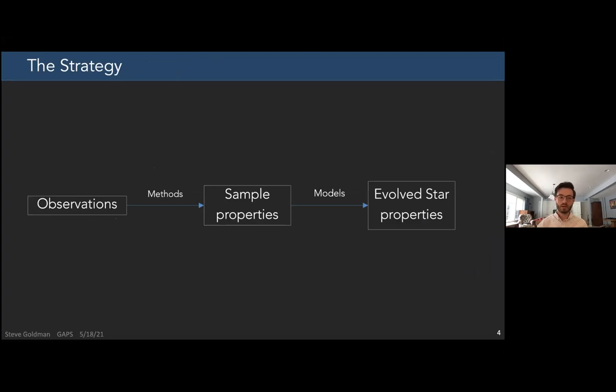This is our general strategy for how we tackle our observations. We get a simple observation, we use a couple different methods and techniques to get sample properties, and then we use more advanced modeling to the underlying physics. This is something I'll come back to in a minute.